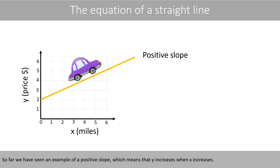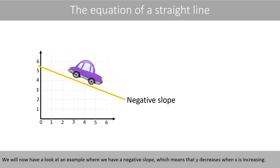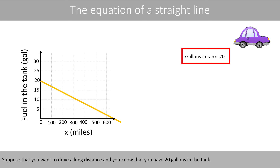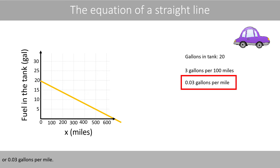So far we have seen an example of a positive slope, which means that Y increases when X increases. We have also seen an example where the slope is 0, which means that Y does not change when X is increased. We will now have a look at an example where we have a negative slope, which means that Y decreases when X is increasing. Suppose that you want to drive a long distance, and you know that you have 200 gallons in the tank. We also know that the fuel consumption is 3 gallons per 100 miles, or 0.03 gallons per mile.